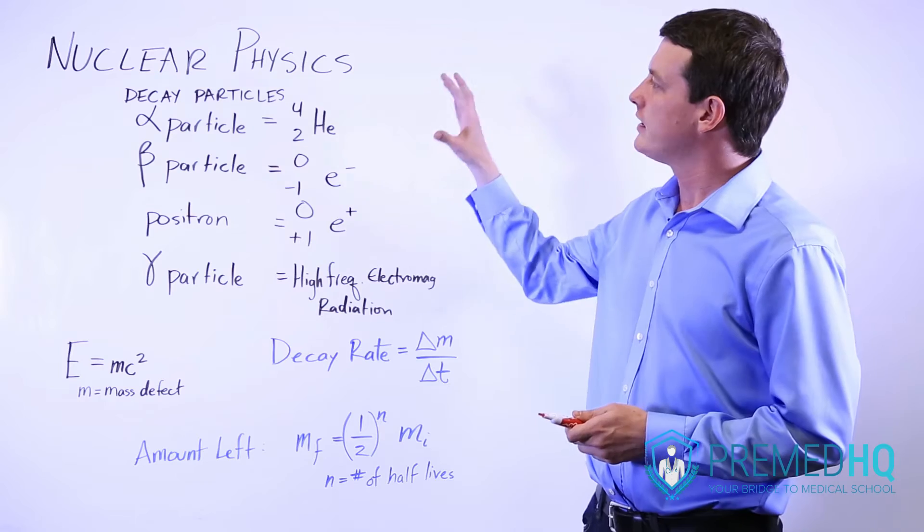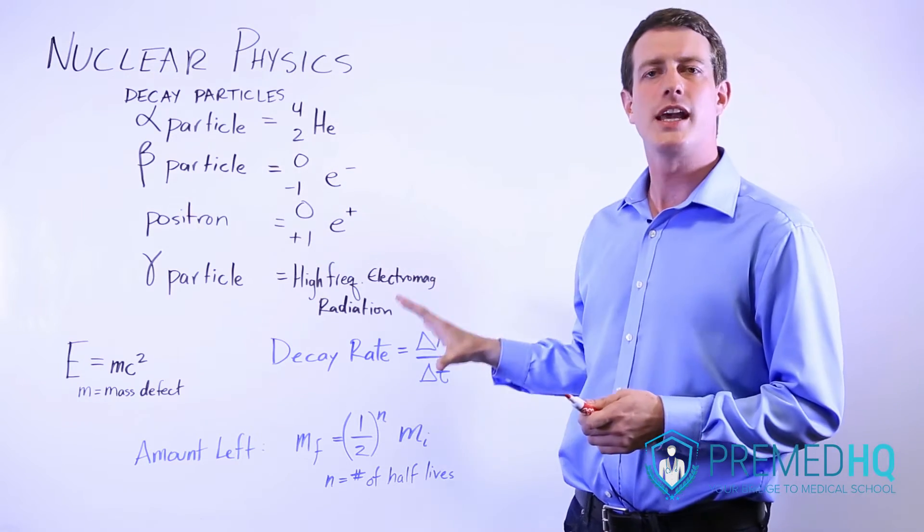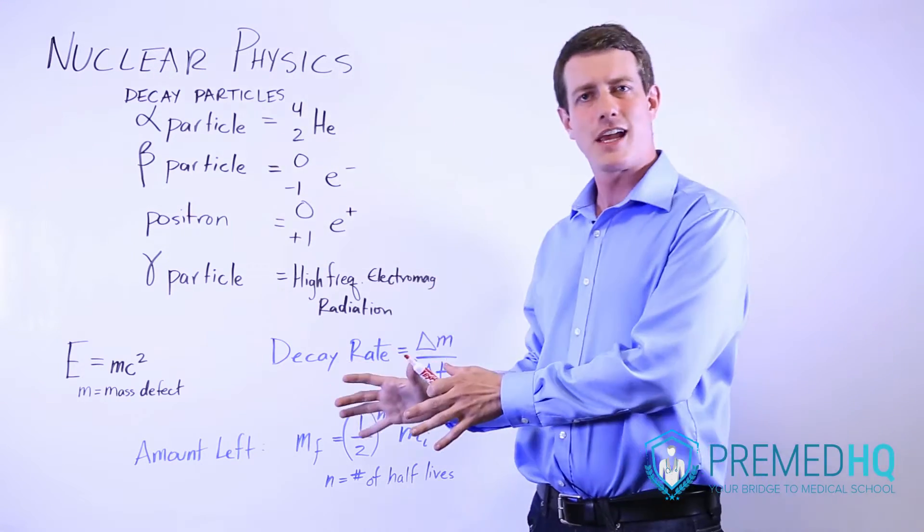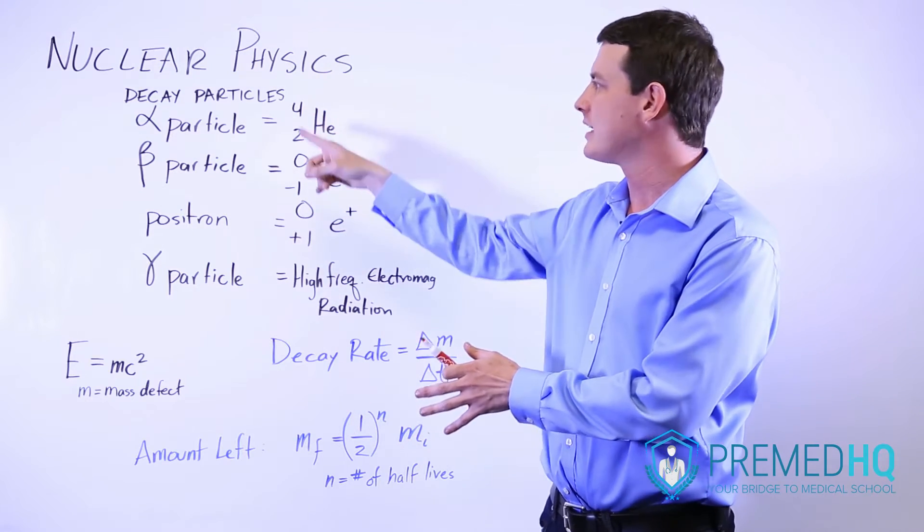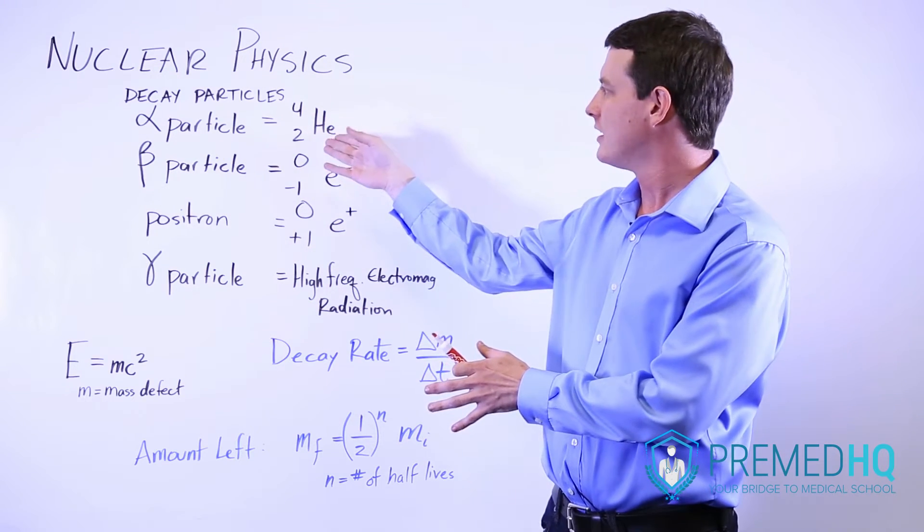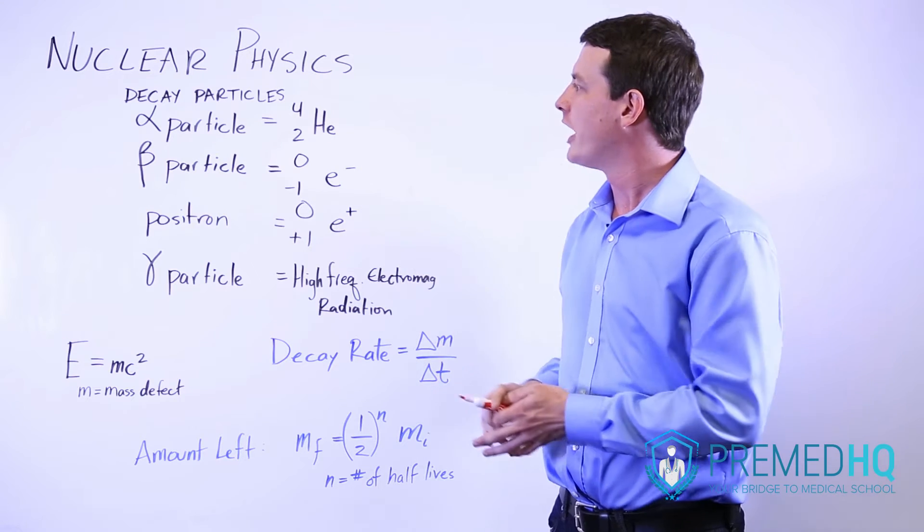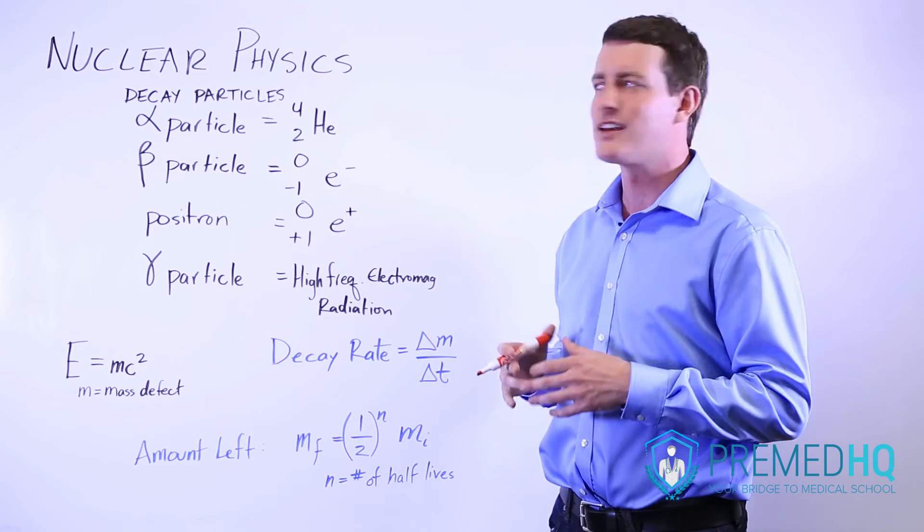The first thing is to be aware of the different types of decay particles, and this is an area where physics and chemistry overlap because it's releasing chemical compounds such as a helium particle or alpha particle or various electrons.